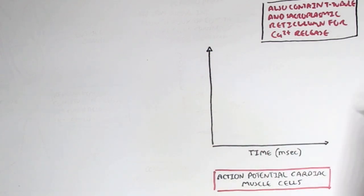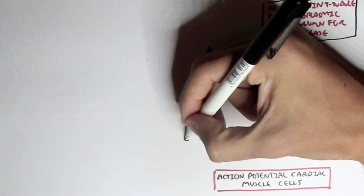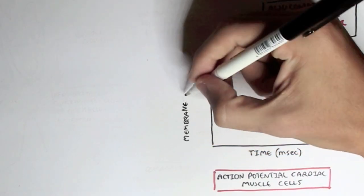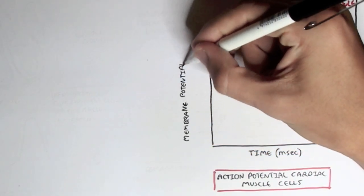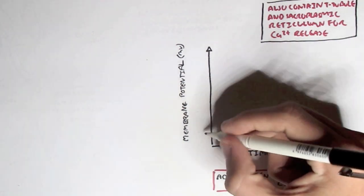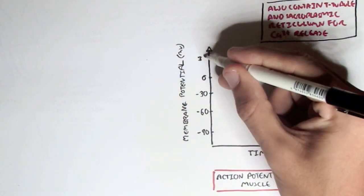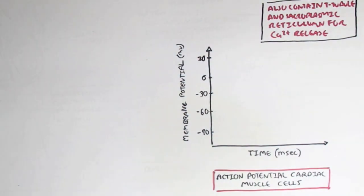Here we have the x-axis with time in milliseconds and the membrane potential in millivolts on the y-axis. The values shown are negative 90 millivolts, negative 60, negative 30, zero, and positive 30.